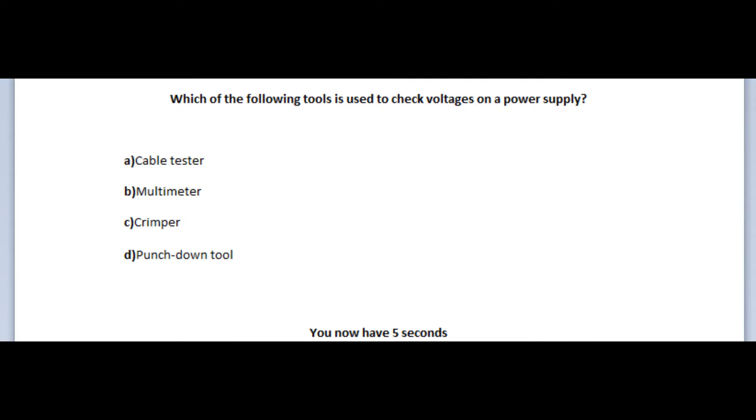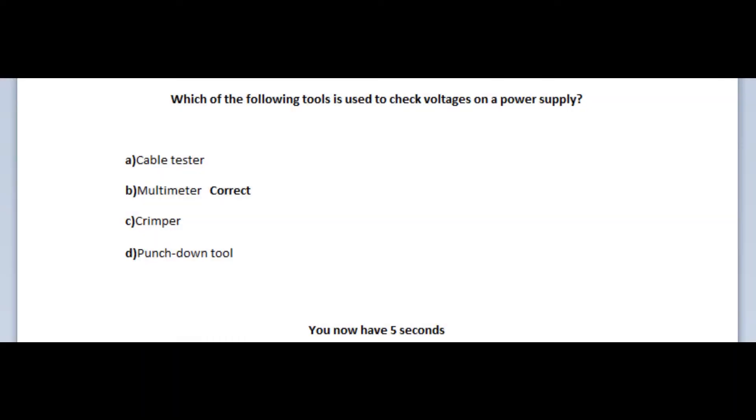Let us jump to our fifth question. Which of the following tools is used to check voltages on a power supply? Is it A, cable tester? Is it B, multimeter? Is it C, crimper? Or is it D, punch down tool? You now have 5 seconds.